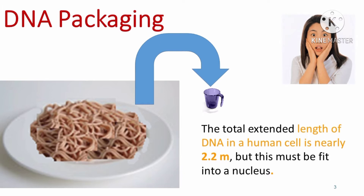In prokaryotes such as E. coli, though they do not have a definite nucleus, the DNA is not scattered throughout the cell. DNA being negatively charged is held with some proteins that have positive charges in a region termed as nucleoid. But in eukaryotes, this organization is much more complex.